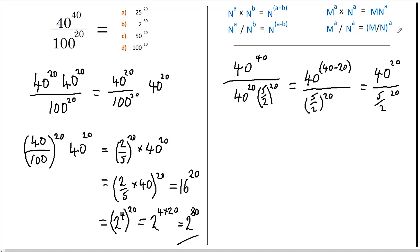Again using this rule here, this now becomes 40 over 5 over 2, all to the power of 20. Or we can rewrite this as 2 fifths of 40 to the power of 20. All I've done here is multiply the top and the bottom by 2 fifths, and this then equals 2 fifths of 40 is 16, so it's 16 to the power of 20.